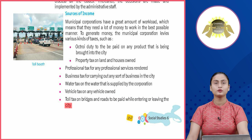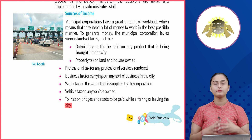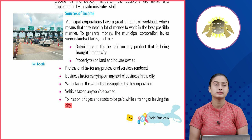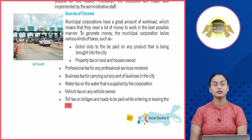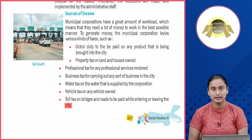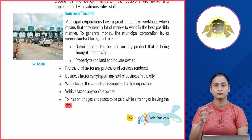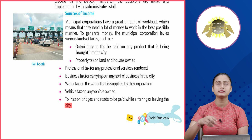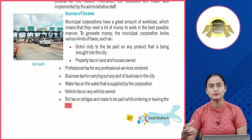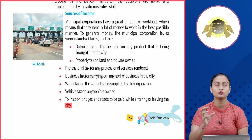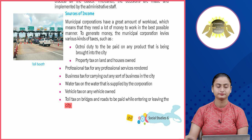Additional taxes include vehicle tax on any vehicle owned, toll tax on bridges and roads paid while entering or leaving the city. Municipal corporations ko bohut bada area sambhalna hota hai, isliye bohut saare funds ki zaroorat hoti hai. Water supply pe water ka tax lagta hai, electricity pe tax lagta hai, aur octroi yaani ek city se doosri city mein jab koi saamaan pohunchta hai toh us pe bhi tax lagvaya jaata hai.